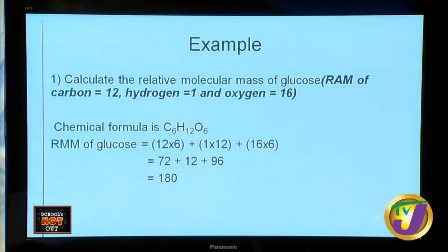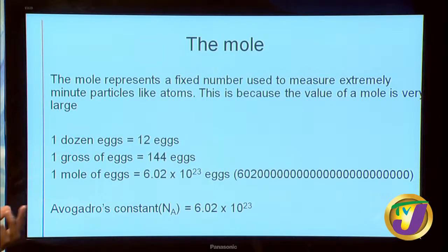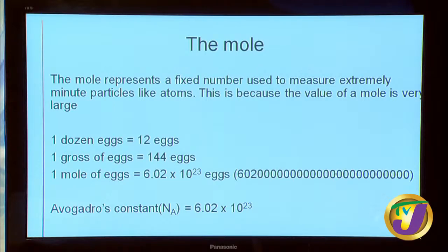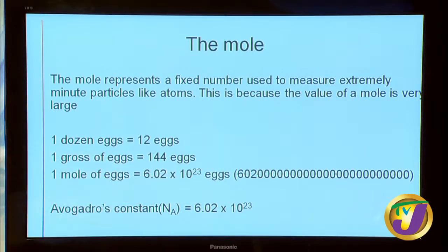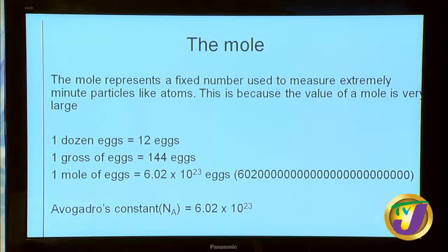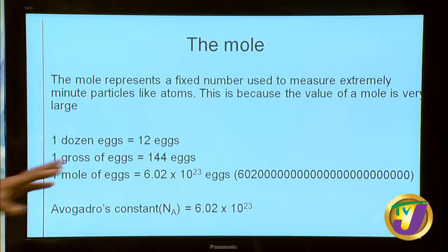The mole represents a fixed number used to measure extremely minute or small particles. Its value is very large. If I asked for a dozen eggs, I'd get 12; a gross gives 144. But one mole of eggs would be 6.02 × 10²³ — more zeros than money in the world put together. We save this value for atoms because atoms are so small that even this number of them can't be seen.